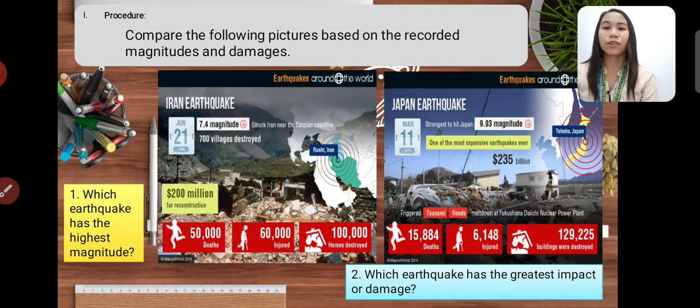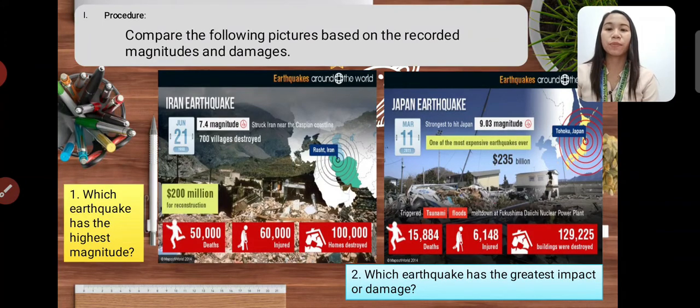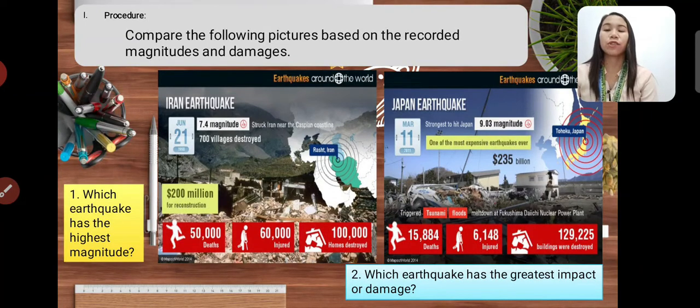Next, the Japan earthquake. Strongest to hit Japan, 9.0 magnitude. One of the most expensive earthquakes ever. It triggered a tsunami and floods. It knocked down the Fukushima Daiichi nuclear power plant. 15,884 deaths. 6,148 injured. 129,225 buildings were destroyed.